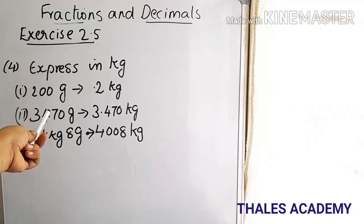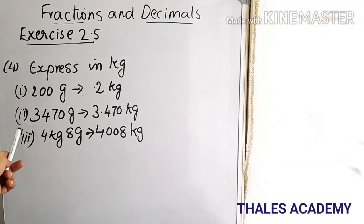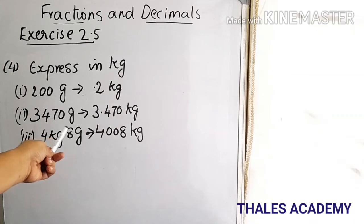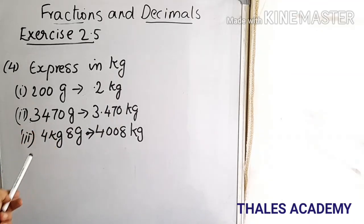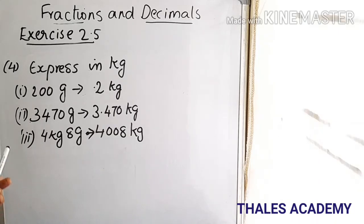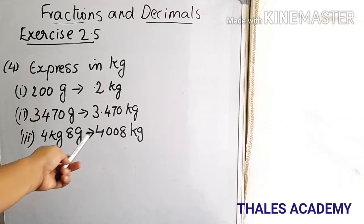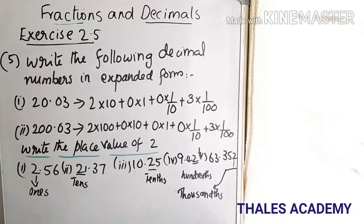Express in kilograms: 200 grams is equivalent to 0.2 kilograms. 3470 grams is equivalent to 3.470 kilograms. 4 kilograms 8 grams is equivalent to 4.008 kilograms.